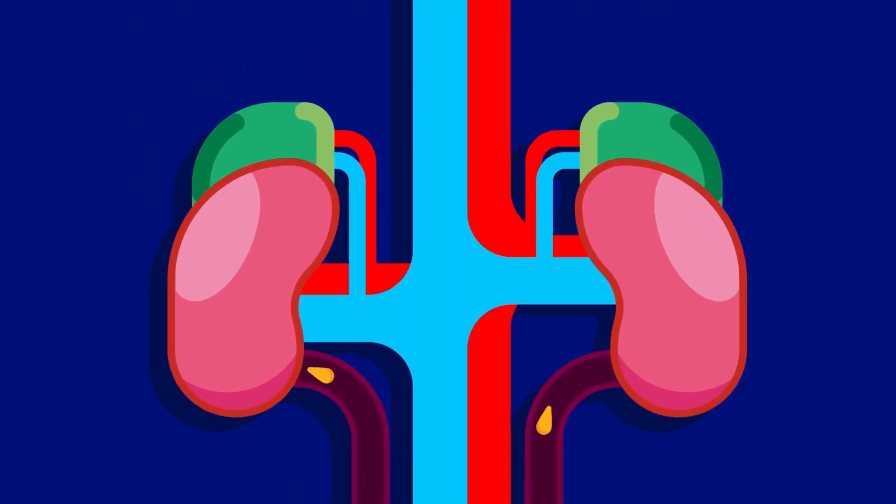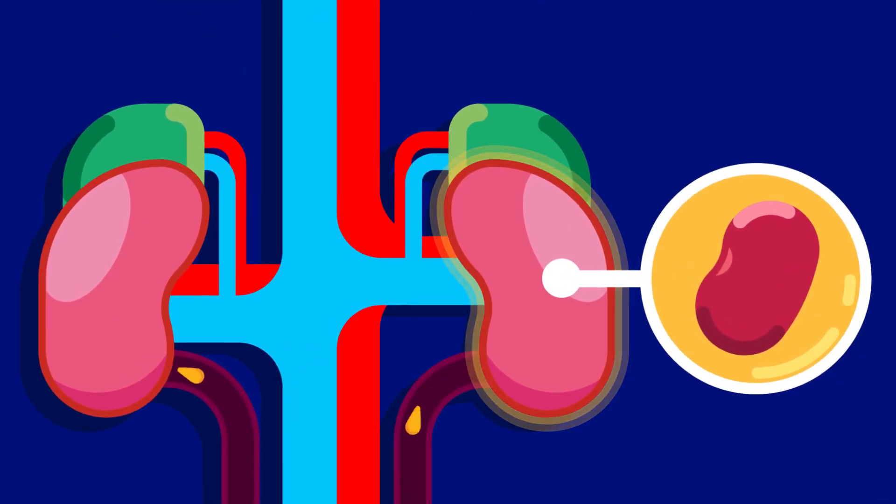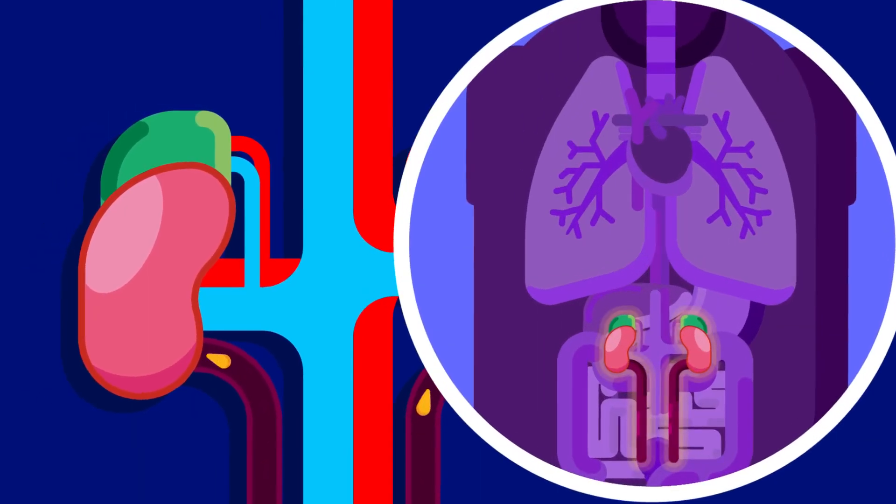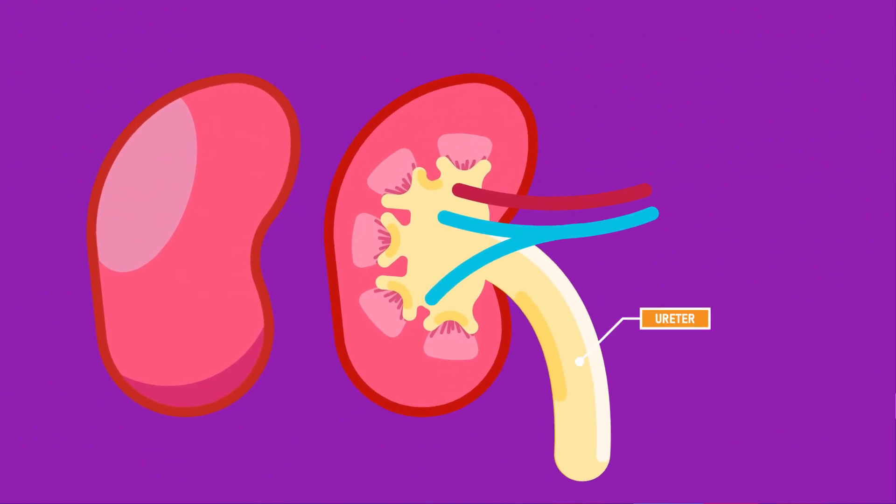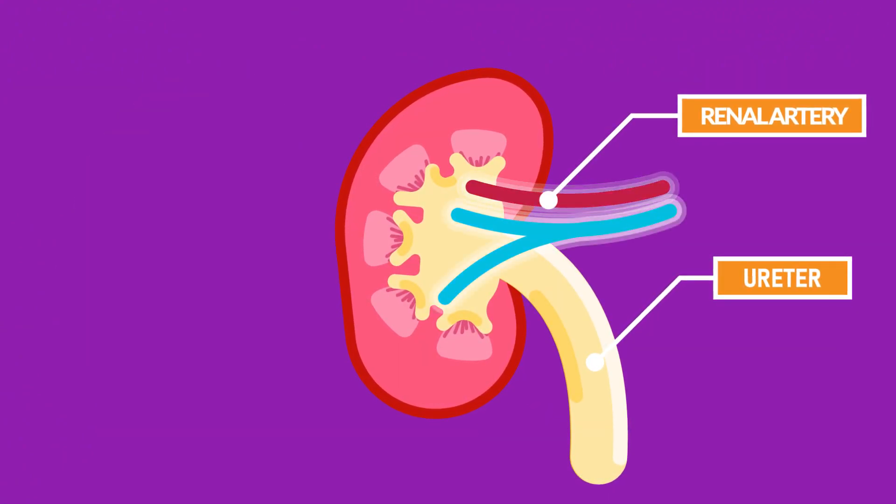Kidney. There are two kidneys. Both are reddish brown and bean shaped. Kidneys are located towards the back of the abdominal cavity. Attached to the kidney are ureta, renal artery, and renal vein.